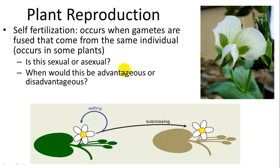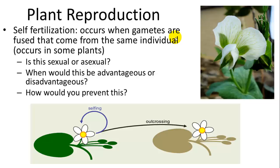When would self-fertilization be advantageous or disadvantageous? It takes the opportunity of asexual reproduction in that you only need one individual — if you're isolated and there are no other pollinators or individuals with flowers around, you can just pollinate yourself. It would be disadvantageous if there are other individuals around and no mechanisms block self-fertilization.